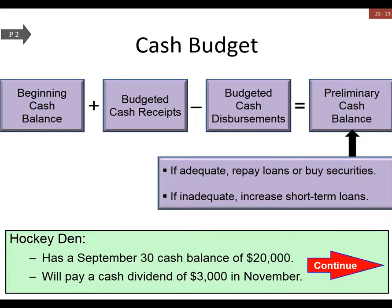We're picking up again here from the cash budget. The cash budget is made up of the beginning cash balance, plus budgeted cash receipts, minus budgeted cash disbursements, which equals our preliminary cash balance. We'll see in the next slide how the preliminary cash balance helps us understand if we have enough cash on hand and if we need to take out a loan.